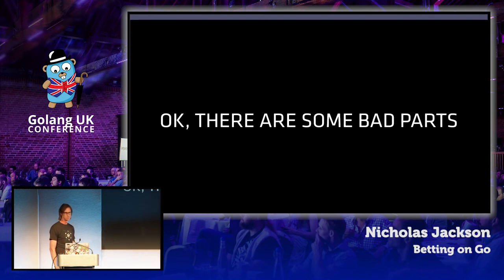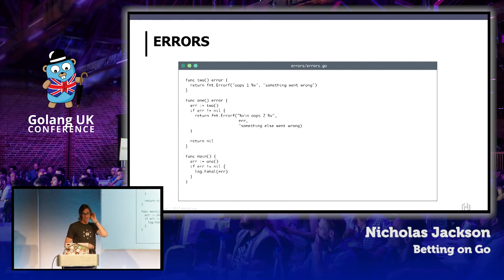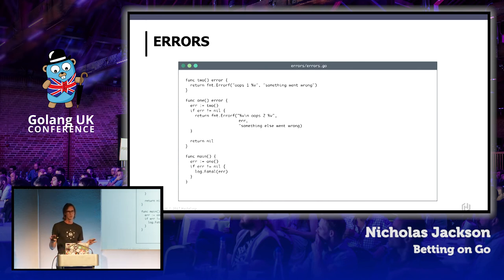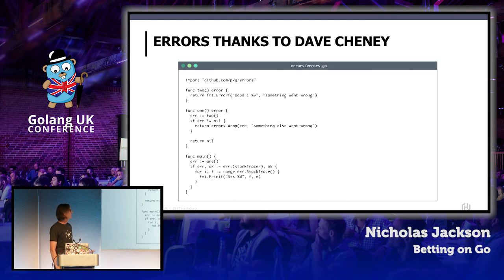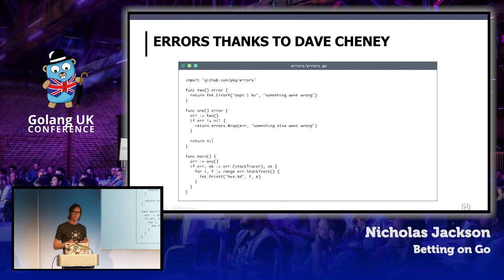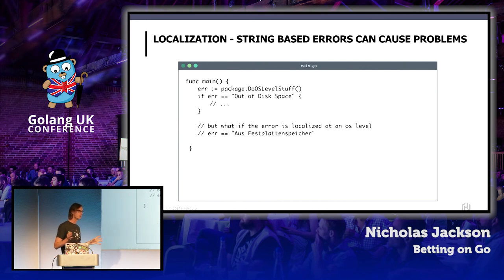So there are some bad parts. I'm not a fan of errors. I think the core problem with errors in the standard library is it's just too basic. The concept of using strings is fine, but you find yourself doing horrible stuff like having to wrap errors to bubble them across properly. Dave wrote the errors package, which is pretty awesome and gives you stack trace capability. But one of the problems we had with errors as strings was localization.